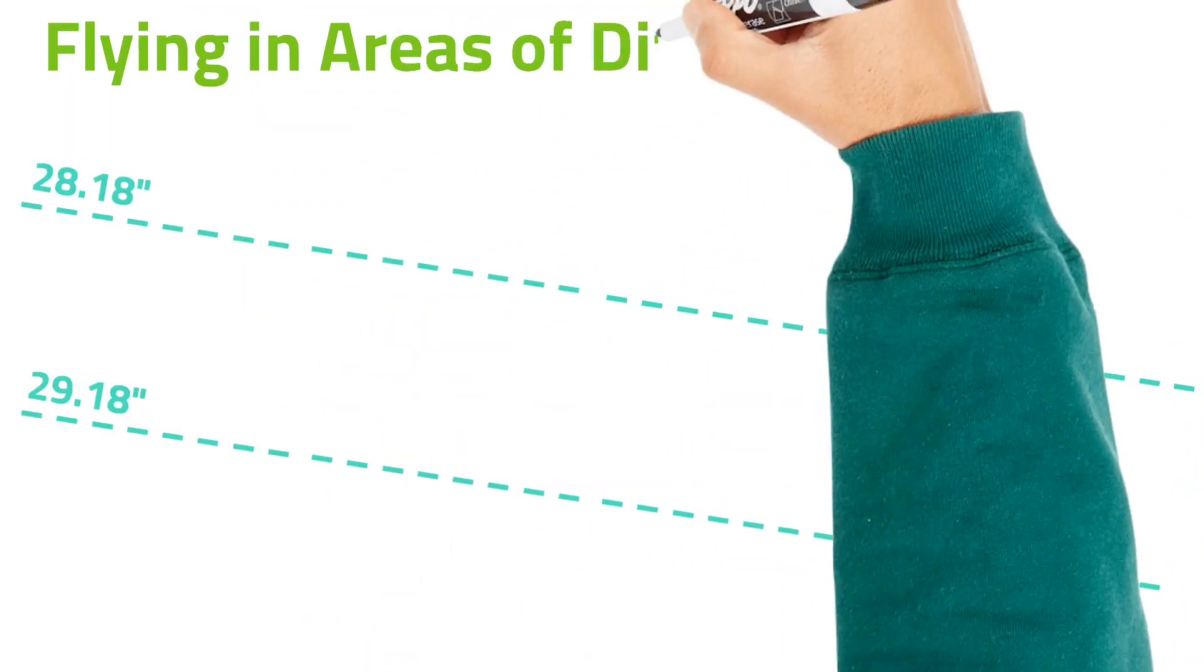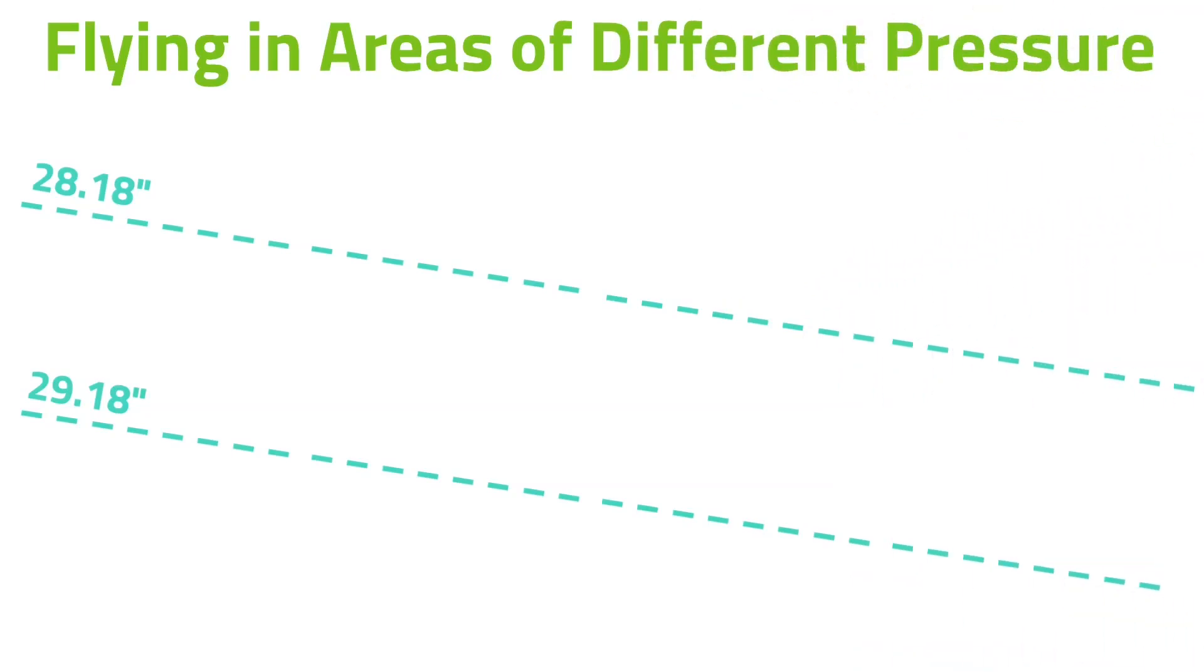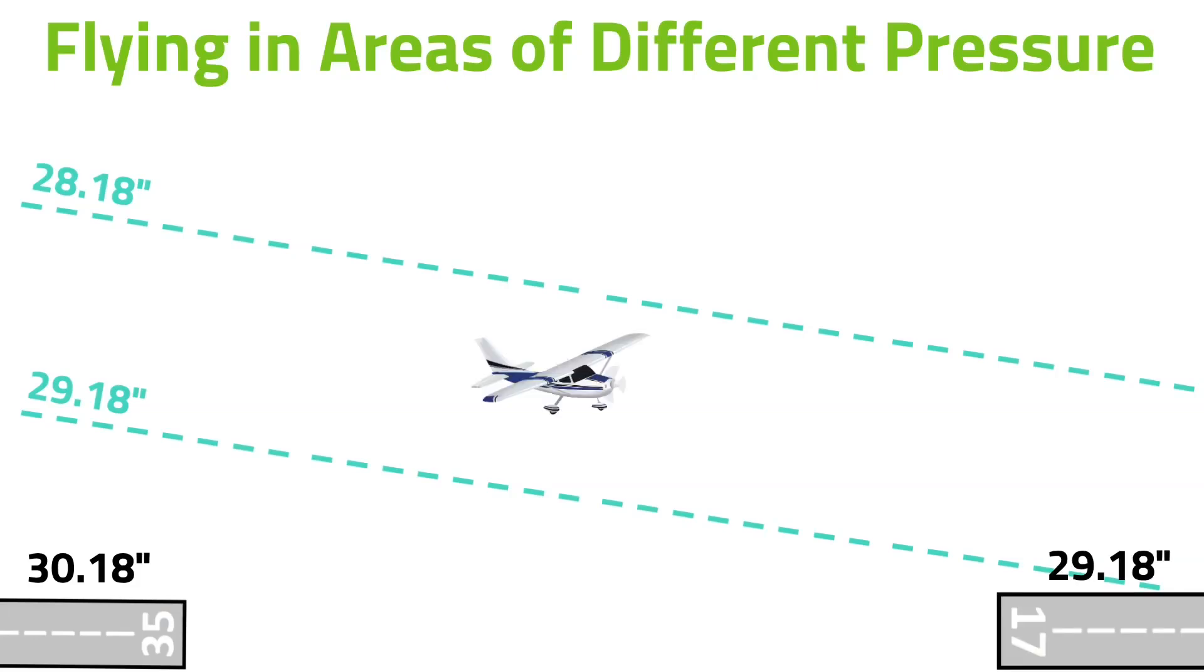Alright, now that you've got that down, let's talk about flying in areas of different air pressure. Let's say I take off from an airfield where the altimeter setting is 30.18. And I fly to another one where it's 29.18. So remember, pressure decreases as we increase our altitude. So, these higher numbers mean that we're in an area of higher air pressure. And we're flying over here to an area of lower air pressure.